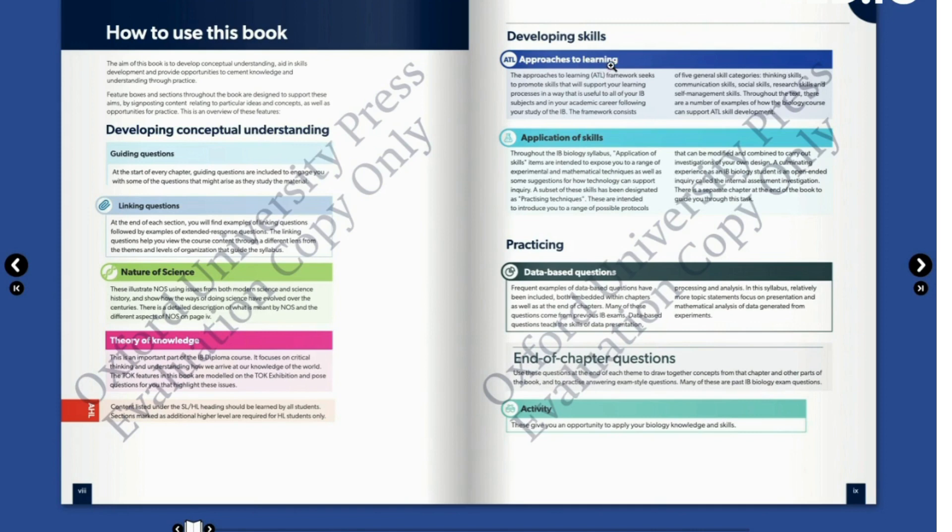When it comes to developing skills, we have the approach to learning. This framework consists of five general skills: thinking skills, communication, social, research, and self-management skills. This part is very important and useful for all IB subjects. The application of skills framework is also intended to introduce students to a range of possible protocols that can be modified and combined to carry out investigations on your own. When it comes to practicing, there are database questions and end of chapter questions.